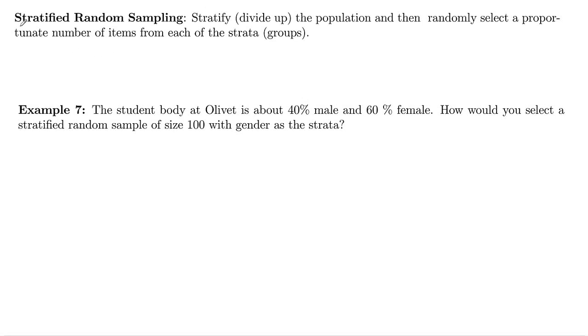Sometimes we want to use a method called stratified random sampling. In this case, we're going to stratify or divide up our population into groups, and then we're going to randomly select proportionate numbers of items from each of our strata, or each of our groups. So here in example seven,